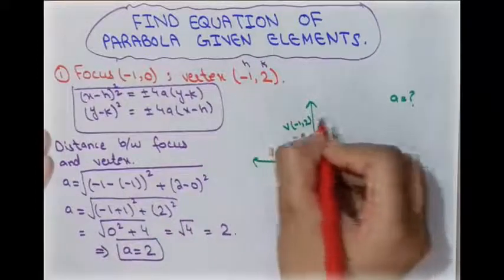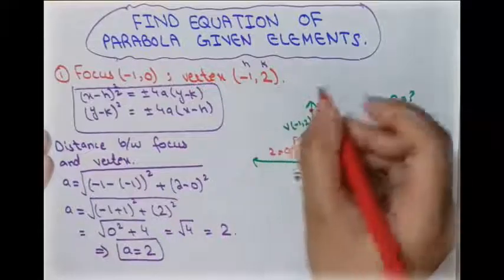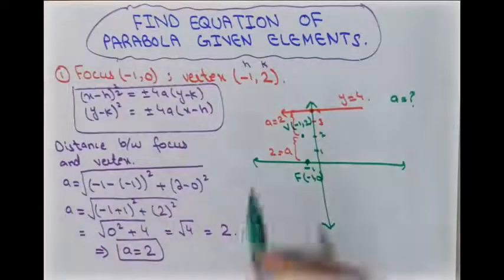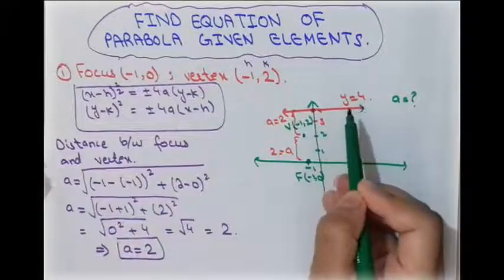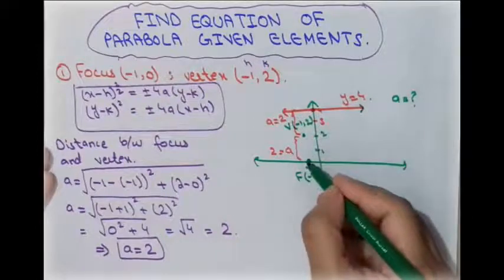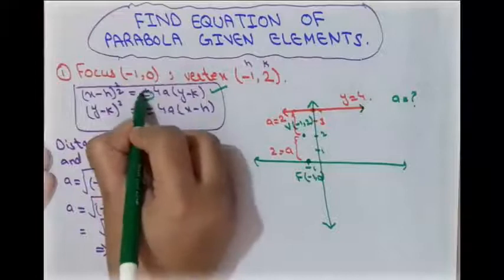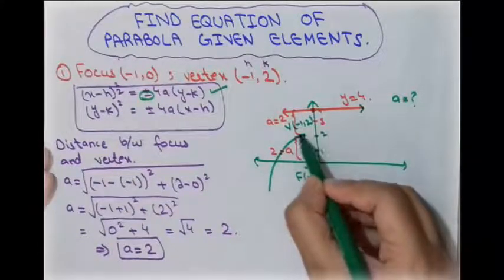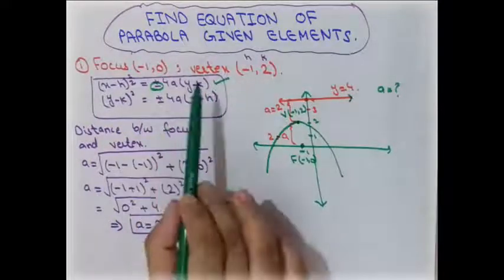If we move 2 units from the vertex, the directrix line is at y = 4. Always remember that the parabola opens towards the focus and away from the directrix. Here the focus is below the vertex, so the parabola opens downward. We use the equation with the negative sign: (x - h)² = -4a(y - k).